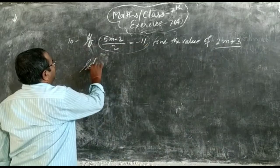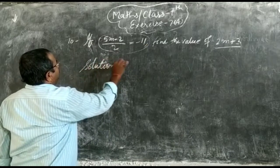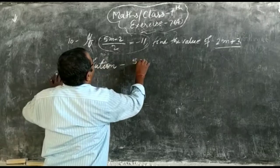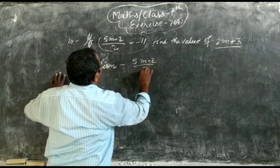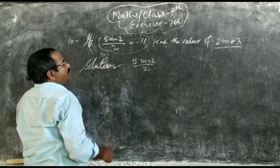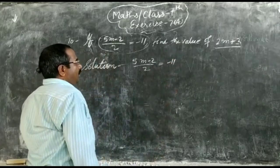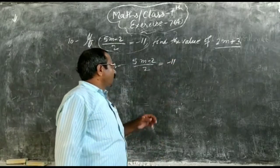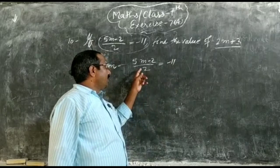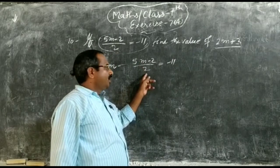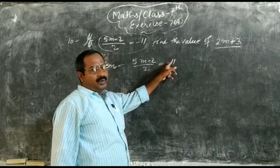The solution is that 5m minus 2 upon 2 is equal to minus 11. Yesterday I told you that when the question is in division form, we will do the cross-multiply.